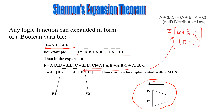You take A and multiply with the first term: A times ĀB. Since A times Ā equals 0, the first term becomes 0. The second term: A times ABC̄ — since A times A equals A, you get ABC̄. The third term: A times ĀB̄C — since A times Ā equals 0, the third term becomes 0. So you are left with the first collected term ABC̄ only.